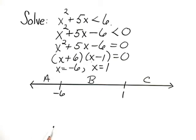Now it turns out that x squared plus 5x minus 6 is 0 here and 0 here. In between, it is either positive or negative. In other words, in this interval, it's either always positive or always negative. Same for interval A and same for interval C.